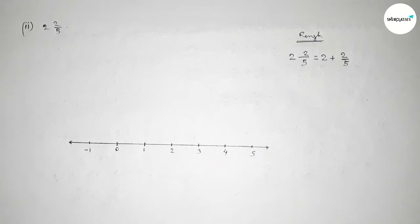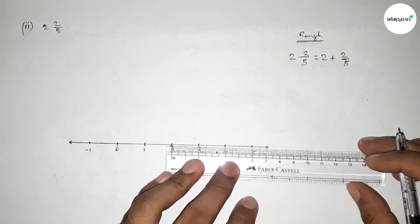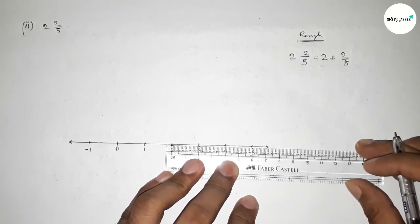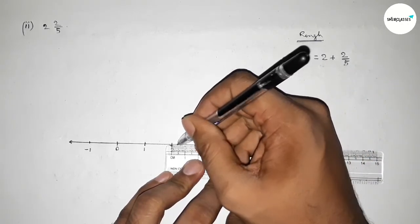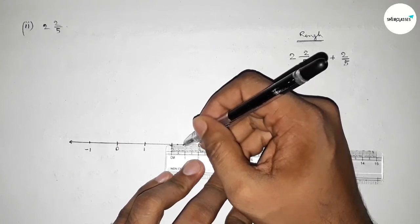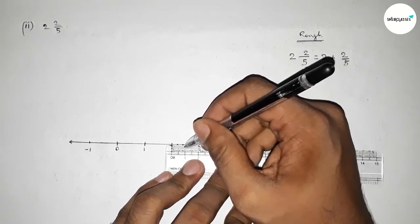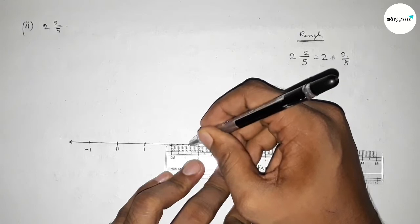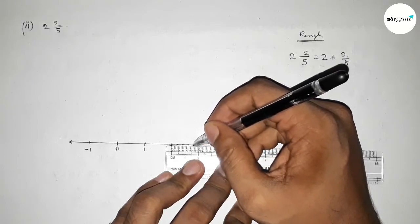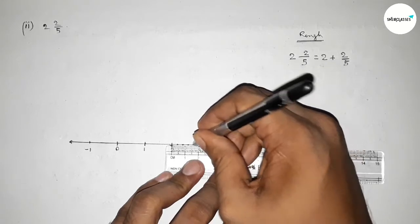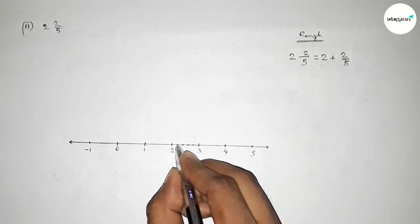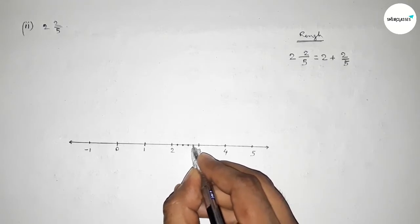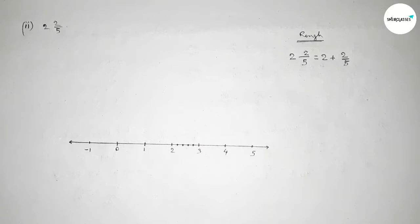The length of each part will be 0.4 units. Taking the first part: one, two, three, four — that is 8, then 12, and 16. By this way we can divide the distance between two and three into five equal parts, marked with a deep color.